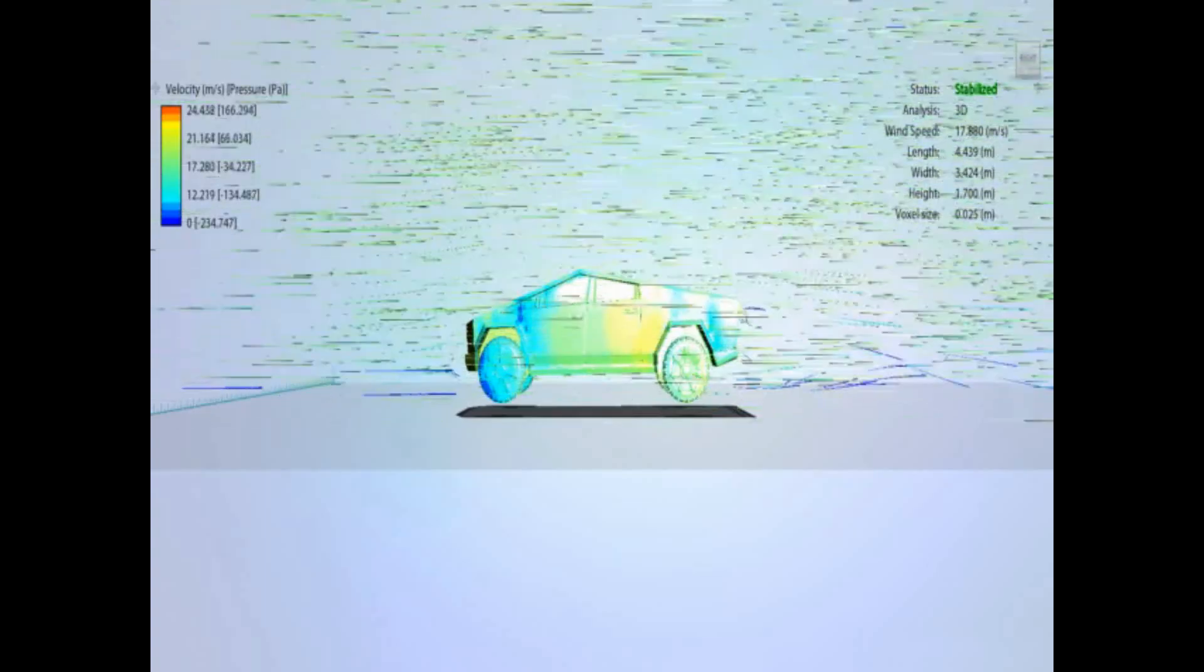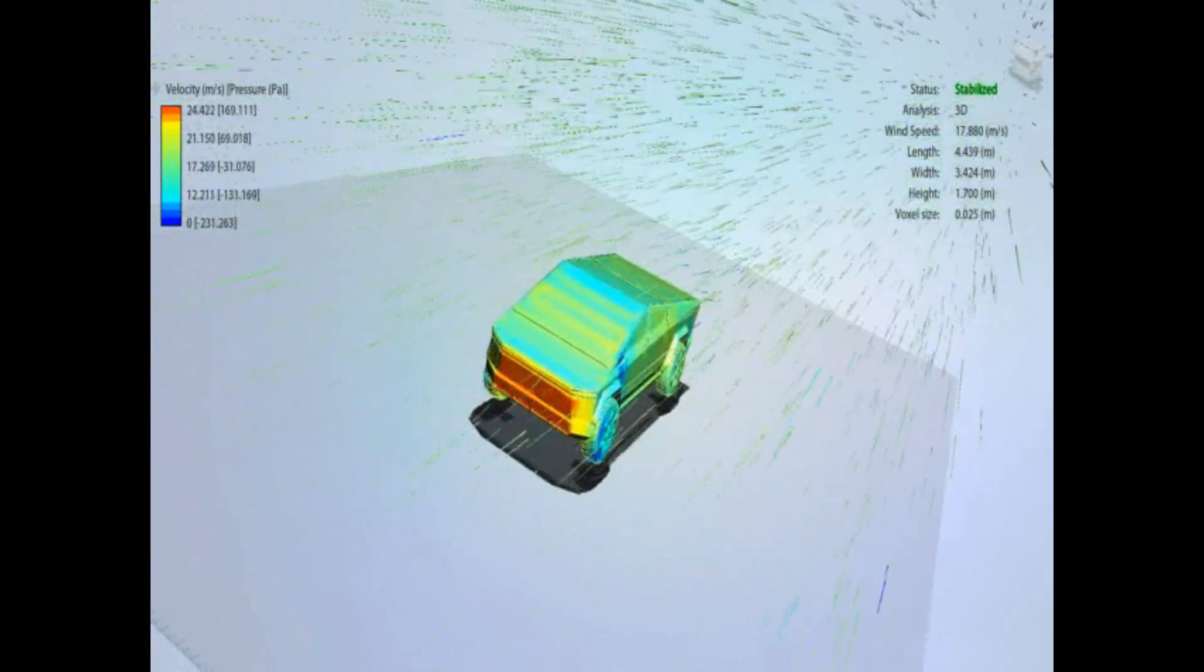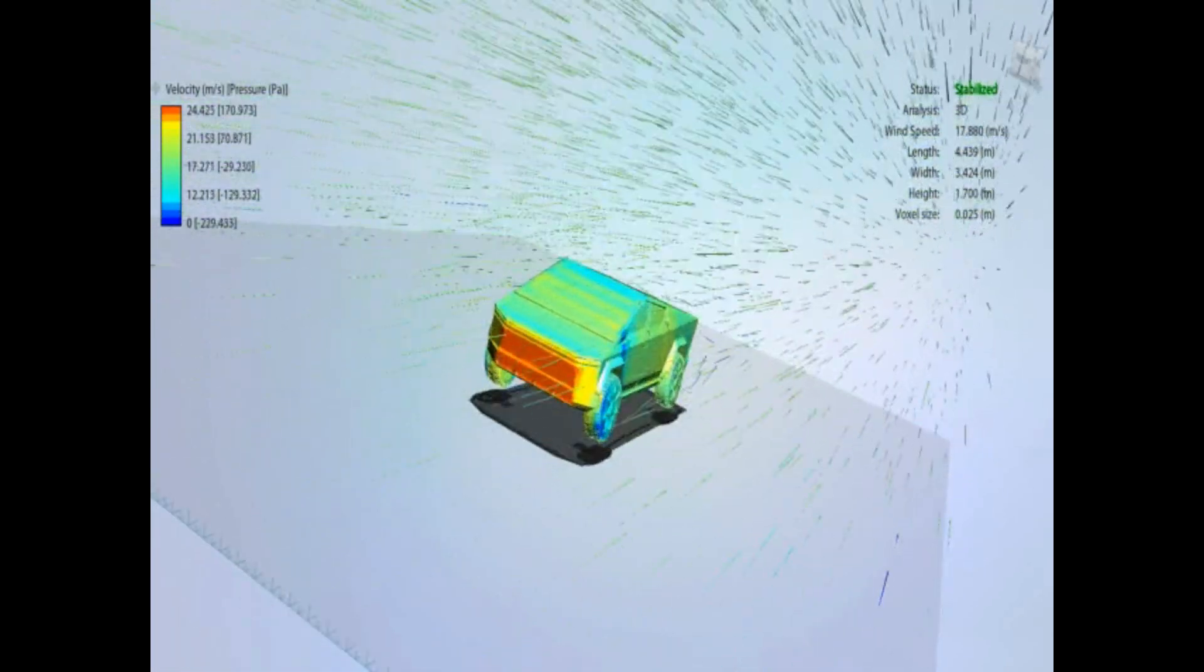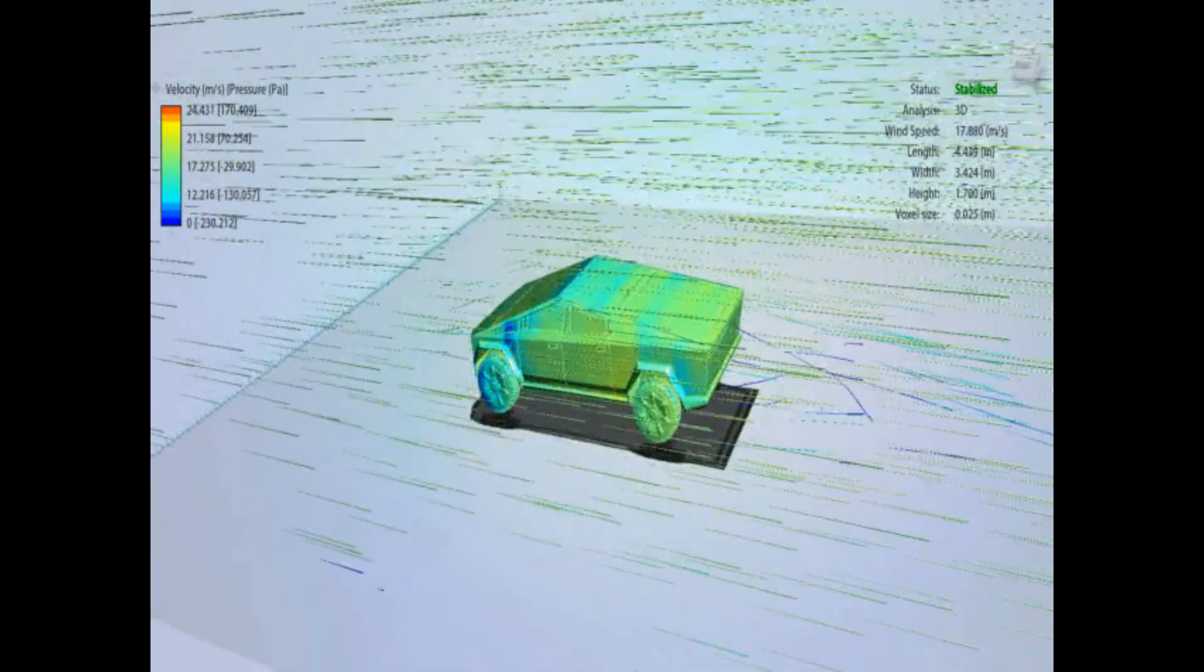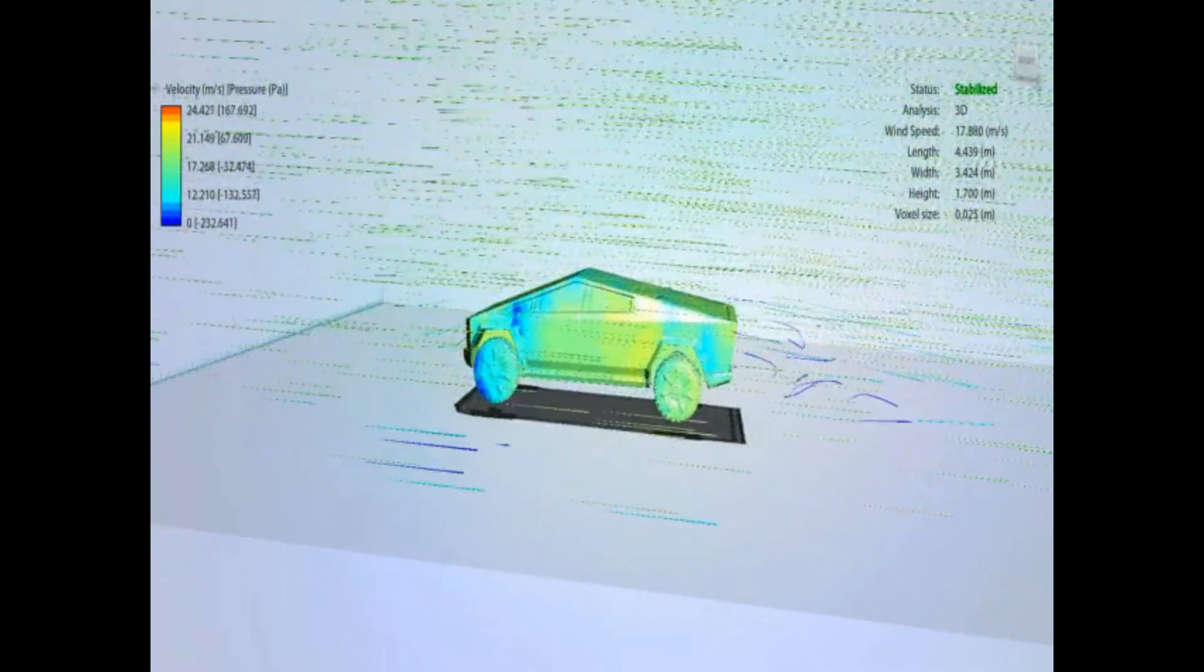and you can see it's all pretty even over most of the car, apart from on that front nose cone, there is that high pressure area. But I think that's some clever design on the part of Tesla, creating that air vortex in front of the car.